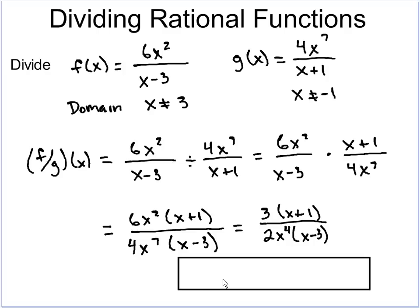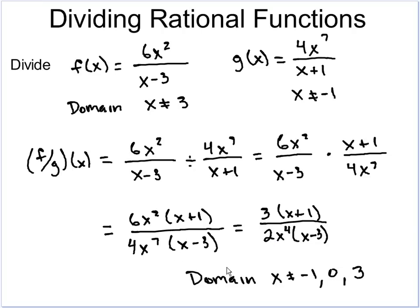One thing in division that we didn't have in multiplication is that the domain actually changes. Because we flipped the second function over, we now have a new denominator creating a new restriction. The domain restrictions from the initial two functions still stay — x cannot equal 3 and cannot equal negative 1. However, we also have a new restriction: if we plug in 0, the bottom becomes 0, so x also cannot equal 0. Dividing rational functions is very similar to multiplication — we just have a little more work with the domain at the end.